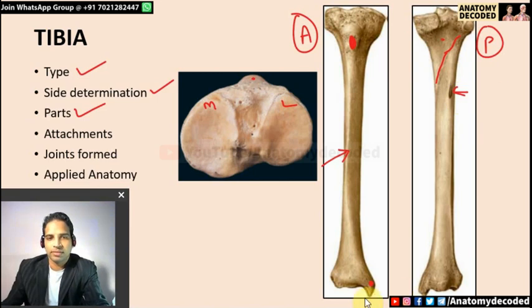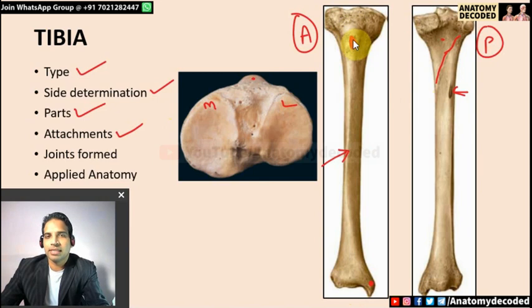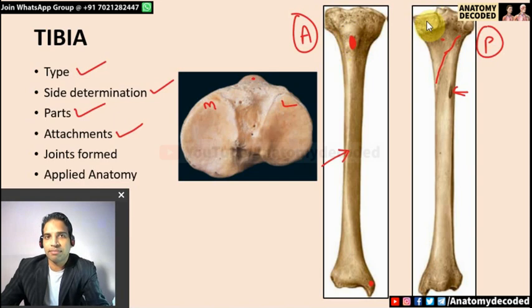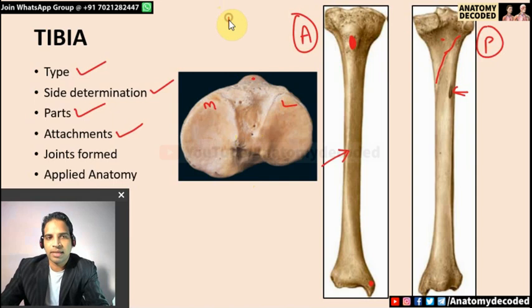The lower end of tibia has the characteristic medial malleolus and an inferior articular surface which articulates with the talus. Attachments: the tibial tuberosity gives attachment to the ligamentum patellae — quadriceps femoris inserts into the patella, and from there the ligamentum patellae extends down to the tibia. The semimembranosus groove is behind the medial condyle.